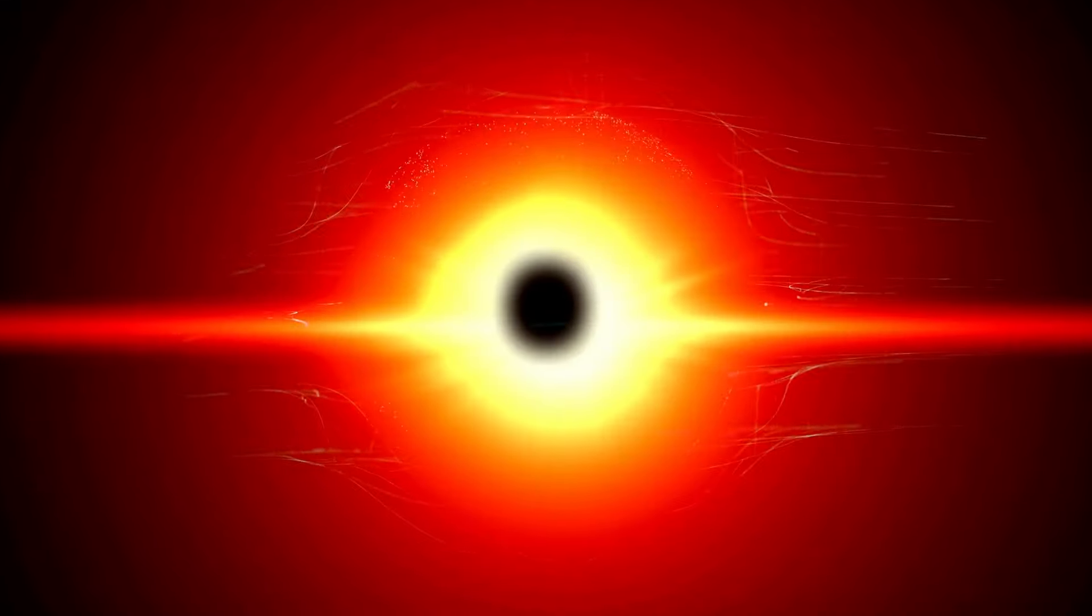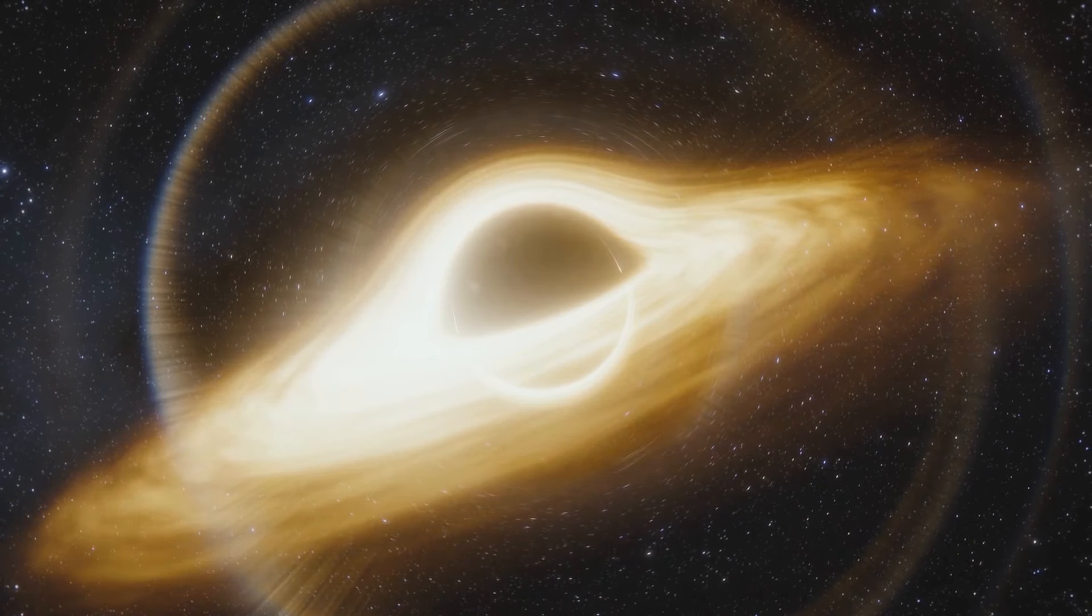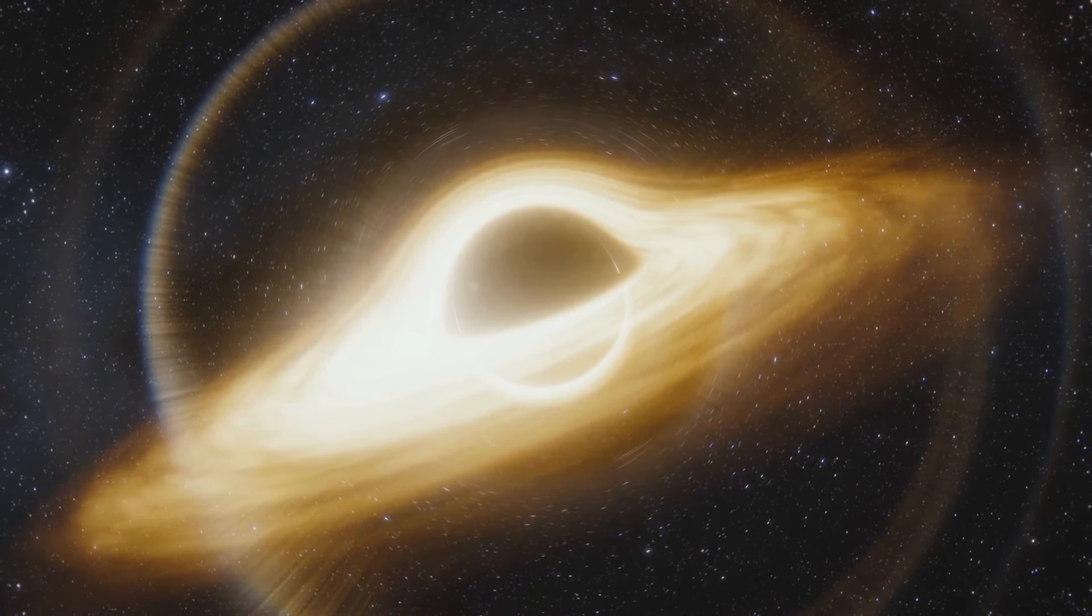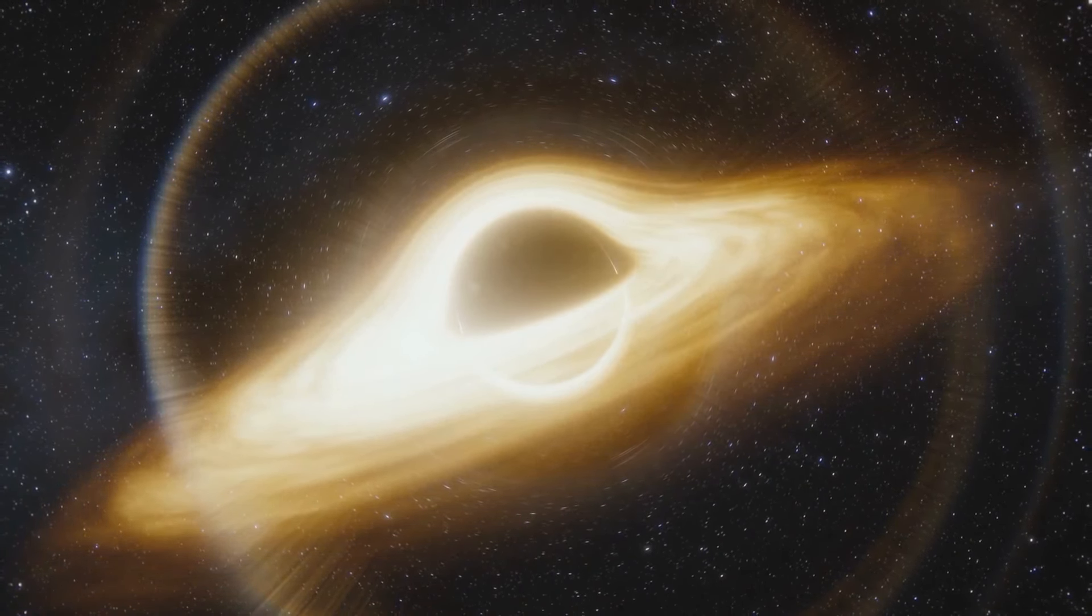This is where things become truly extraordinary. The gravitational pull near a black hole is so incredibly strong that it creates what is known as an event horizon. The event horizon is not a physical barrier, but rather a region where space gradually bends. It is an invisible boundary or point of no return. Once something, such an unfortunate spacecraft or even light, crosses its boundary, it can never escape the clutches of the black hole.